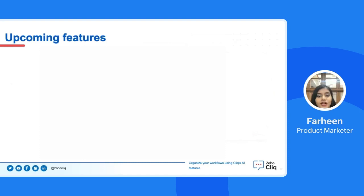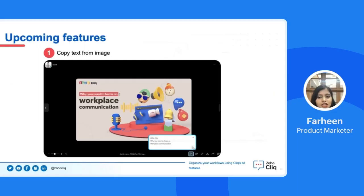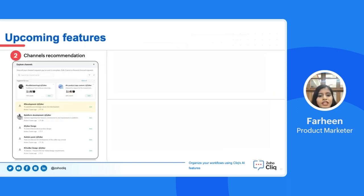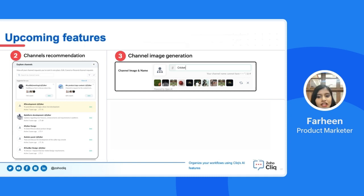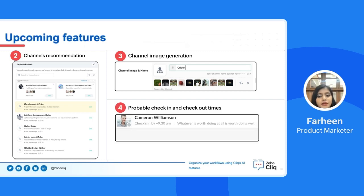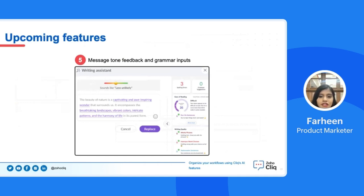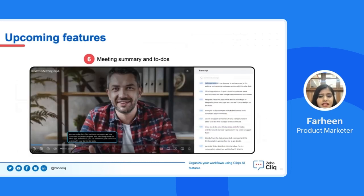Now let us look into what's coming up in Cliq. Here are a few AI features we are currently working on that you will be able to use very soon: copy text from an image by clicking a copy text button; channel recommendations similar to ones you join; channel image recommendations when you enter a channel name; visibility into when a colleague checks in and out so you know when to collaborate; spelling error checks, grammar suggestions, and tone and writing quality analysis for drafted messages; and a meeting transcript with timing so you don't miss out on anything.